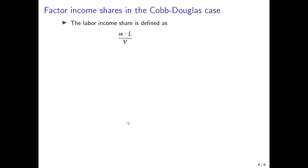Finally, consider the factor income shares in an economy described by a Cobb-Douglas production function under perfect competition. The labor income share is by definition the wage rate multiplied by the number of workers — the total wage bill — divided by GDP. Plugging in the wage rate of one minus alpha times output divided by employment, and multiplying by employment over GDP, the employment and output terms cancel, leaving one minus alpha. So the share of labor income in the economy is constant and equal to one minus alpha.